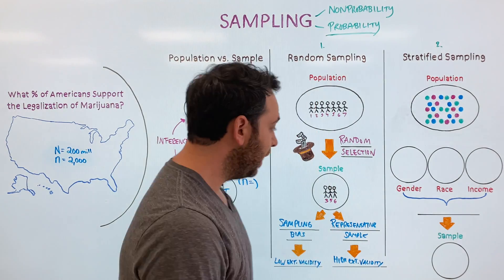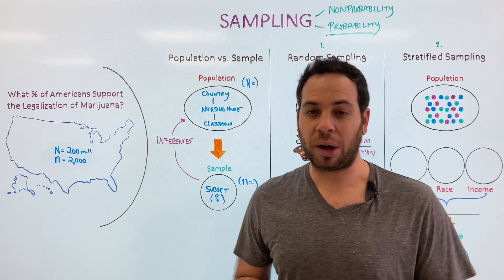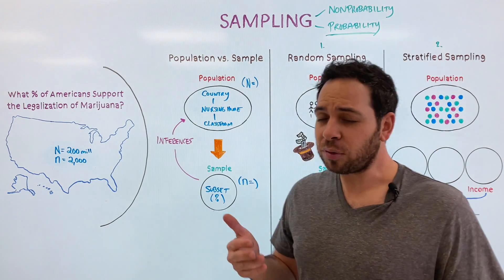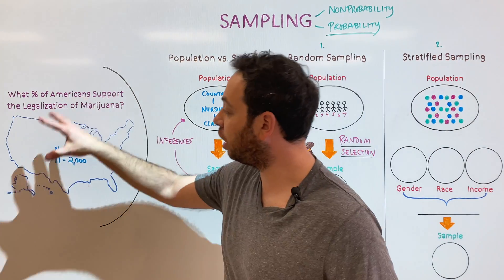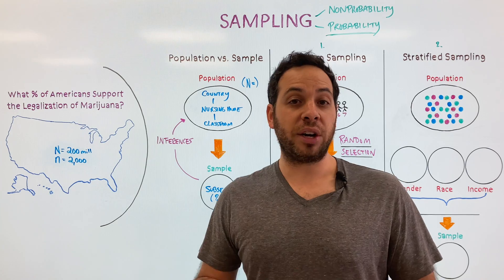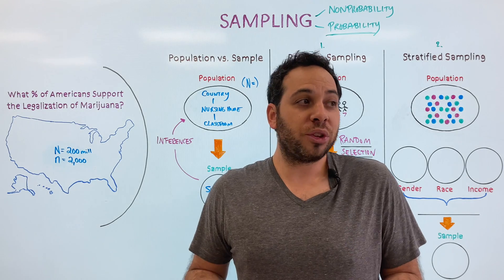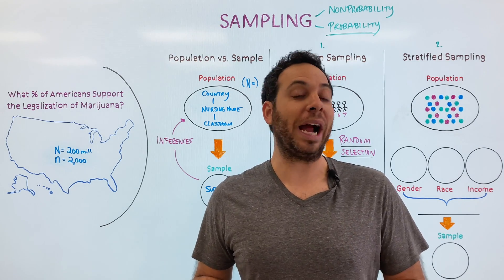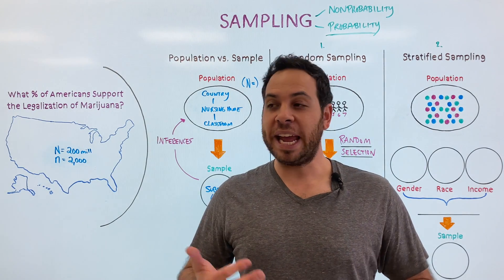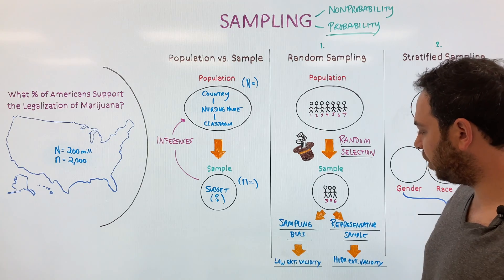One question students often ask is: does it matter how many people are in your sample? It does. There are really two big things to consider: how big is your population, and how much variation is in it. If you're studying a classroom, you might not need a big sample. But if you're studying an entire country, you need a bigger sample size. Also consider the amount of variation — if you're studying rats, there's not much difference between them. But people are very different — different ages, weights, heights, religions, backgrounds — so because of those differences, you'll need a larger sample size.